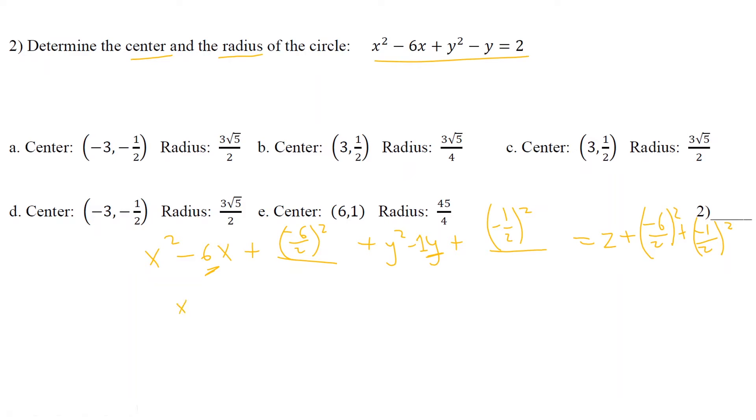Alright, so I have x squared minus 6x plus 9 plus y squared minus y plus 1 fourth equals 2 plus 9 plus 1 fourth. So this one will turn into x minus 3 squared. This one will turn into y minus 1 half squared. And I'll be left with 11 and 1 fourth. So here, we know that the center is equal to 3 and 1 half. How did I get that? I simply negated the negative 3 and the negative 1 half. So it's 3 and 1 half.